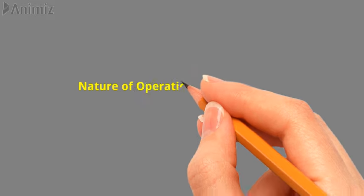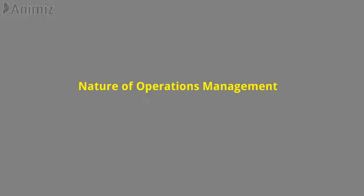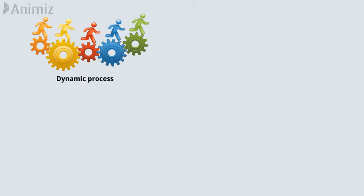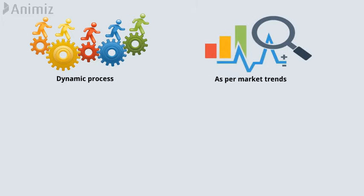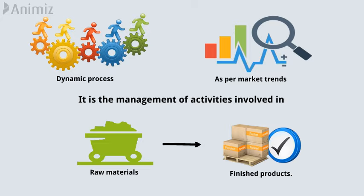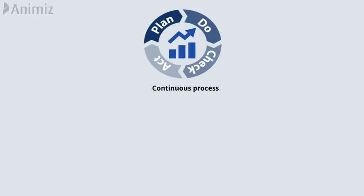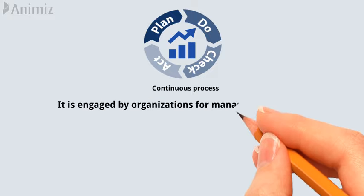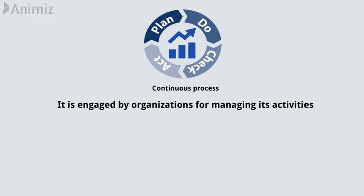Nature of operations management. Operation management is a dynamic process that keeps changing as per market trends. It is the management of activities involved in the conversion of raw materials into finished products. Operation management is a continuous process, engaged by organizations for managing its activities as long as they continue their operations.